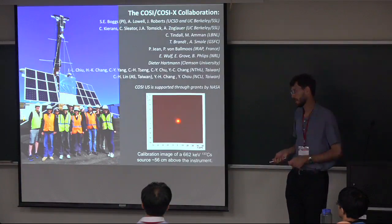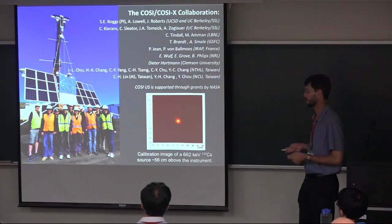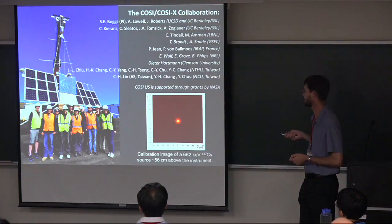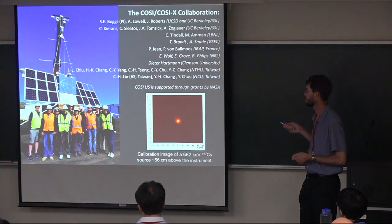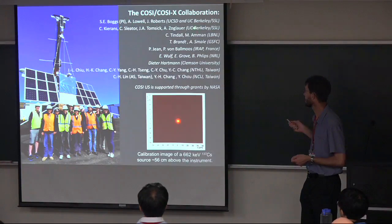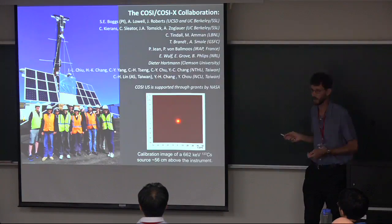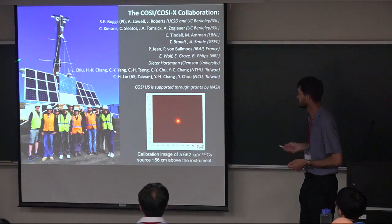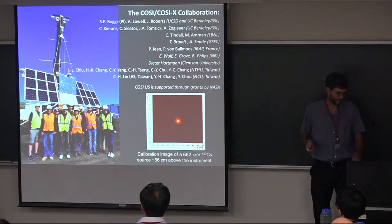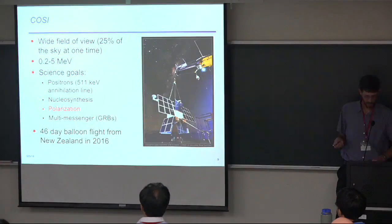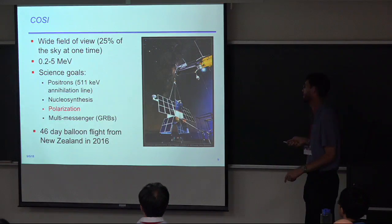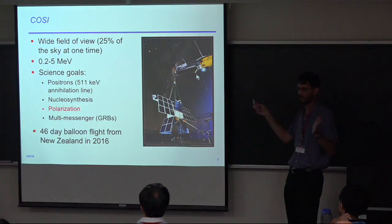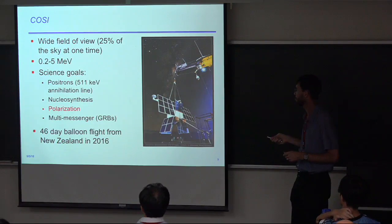The second Compton polarimeter is the Compton Spectrometer and Imager — fairly well optimized for polarization measurements. This is a project I worked on, with Steve Boggs as PI at San Diego. It's a balloon payload with a wide field of view seeing about 25% of the sky at one time, and a bandpass of 0.25 MeV to 5 MeV. It has very good energy resolution from germanium detectors, which lets us do good measurements of the 511 keV annihilation line from the galaxy. One of our prime motivations is mapping the positron annihilation emission — there's a possible connection to black hole jets for some of those positrons.